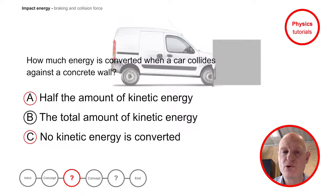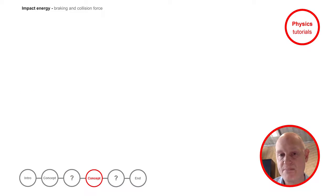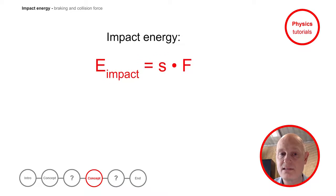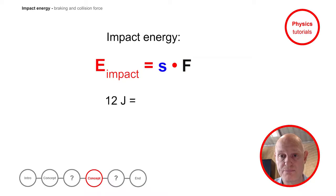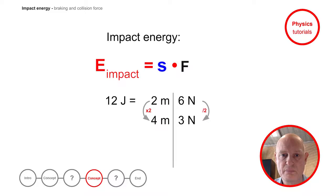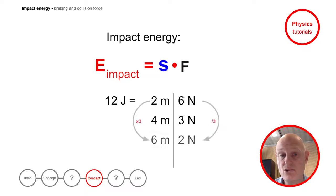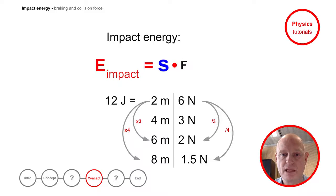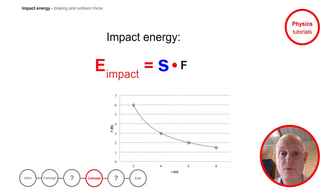Let us take a closer look at the formula of impact energy. How are the braking distance and force related? To find out, we need to imagine that the impact energy is a constant number. When the distance is doubled, the force has to be half as much to find the same number for the impact energy. When the distance is tripled, the force has to be divided by 3, and so on. This proves that the distance and force are inversely proportional.